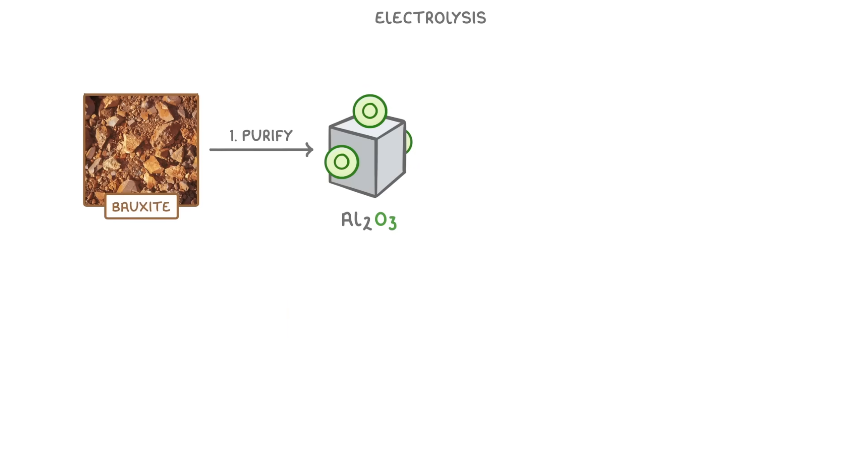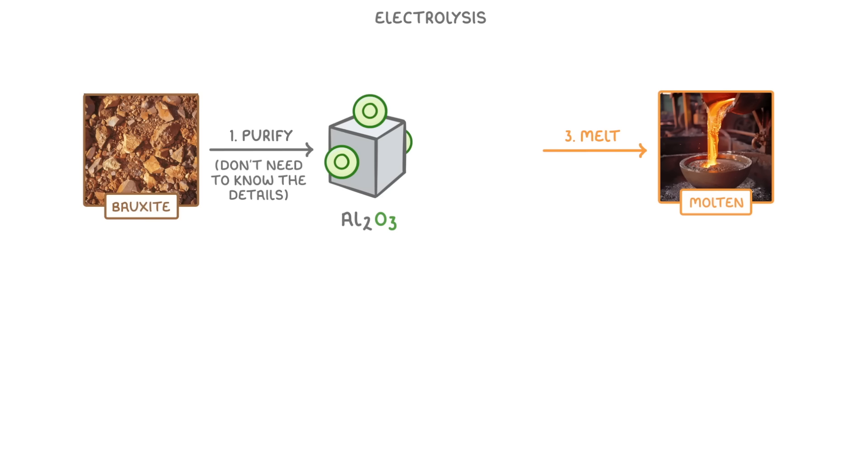The first step is to purify the aluminum oxide from the bauxite that we mined from the ground, which you don't need to know the details of. Next, we need to melt our aluminum oxide to make it molten. Which is actually quite hard, because it has a melting point of over 2000 degrees celsius. So we first mix the aluminum oxide with a mineral called cryolite, which lowers the melting point.